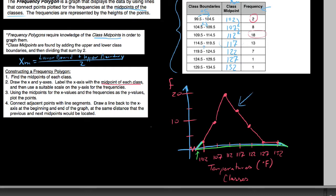That's how you make a frequency polygon. And by the way, how this is related to a histogram: if we were to put the bars in, a frequency polygon is essentially the same thing as a histogram, except the point you're graphing is the middle of your bar — it's like the middle of your bar, because it's the middle of the class.